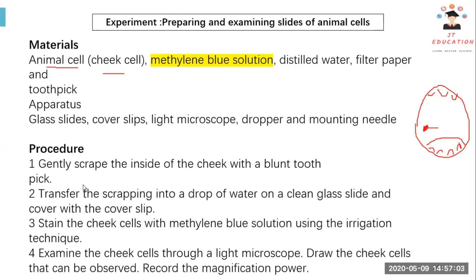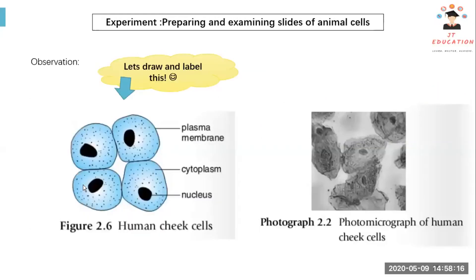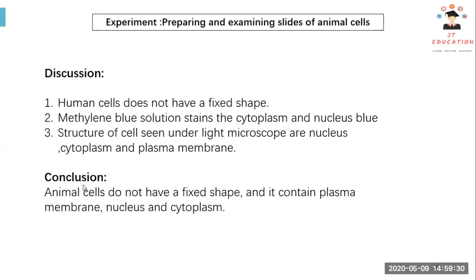Use the same technique as before with a filter paper, and also try to stain the cell, then we observe. Why don't we use iodine? For most plant specimens we use iodine, but for animal specimens we use methylene blue. Please draw and label this.